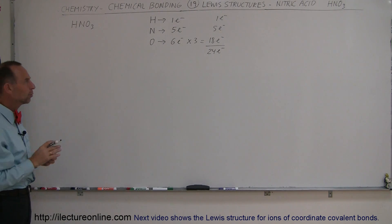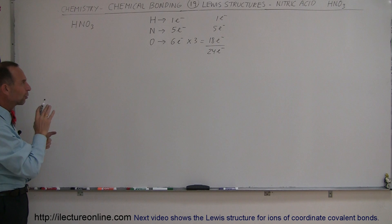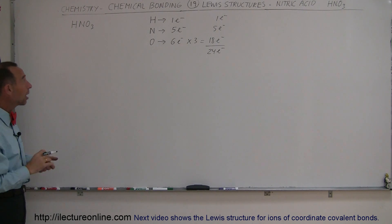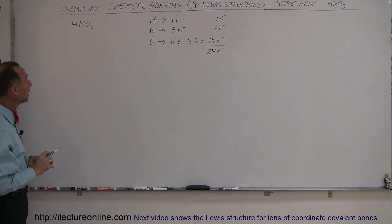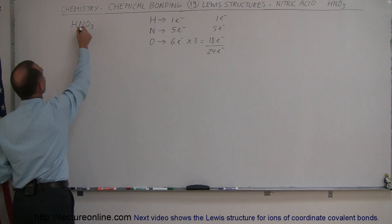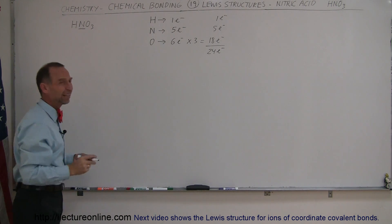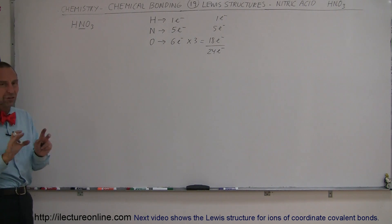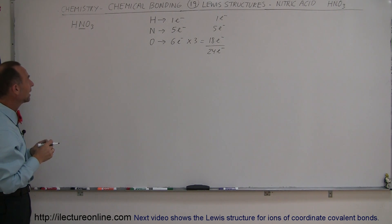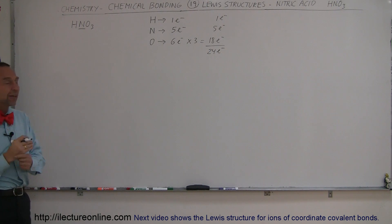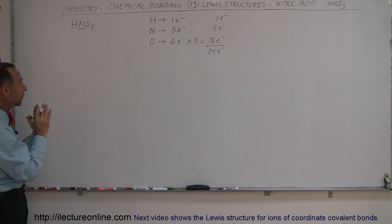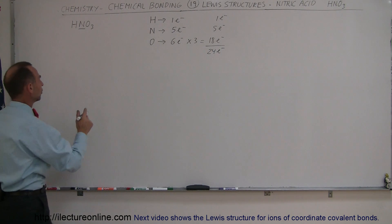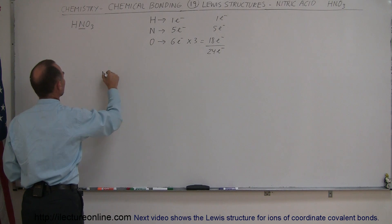That's going to be a help because we want to make sure we have the right number and that the octet rule is satisfied. Next, we're going to see that nitrogen has the lowest electronegativity — it's lower than oxygen. Hydrogen doesn't count; it's just an appendage of one of the atoms. And nitrogen also has the fewest number of valence electrons, so we expect it to be the center of the molecule.